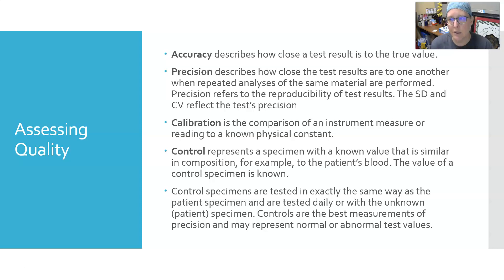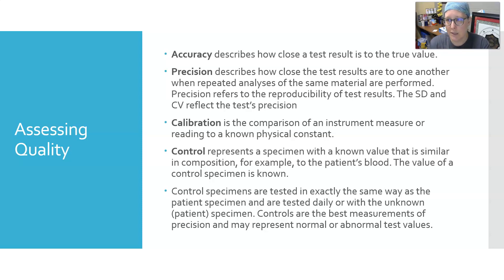For example, if the true glucose is 80 mg/dL and the method has precision issues, you might get 81 one run, then 79, then 82 — different values each time, indicating a precision problem. But if you run it five times and get 80 all five times, you have a very precise analyzer or method.